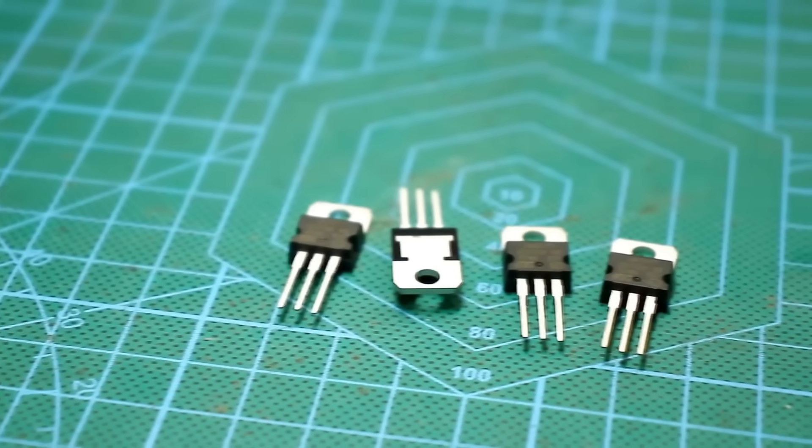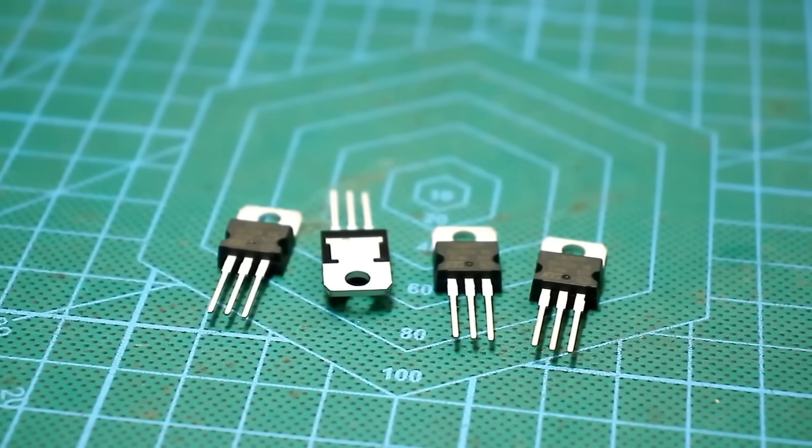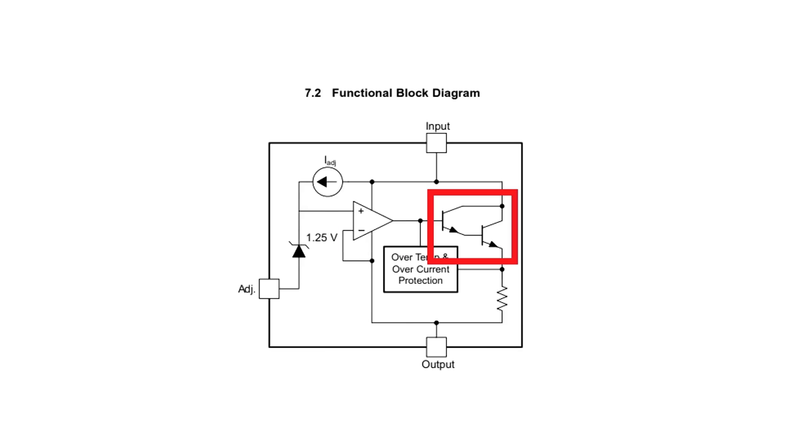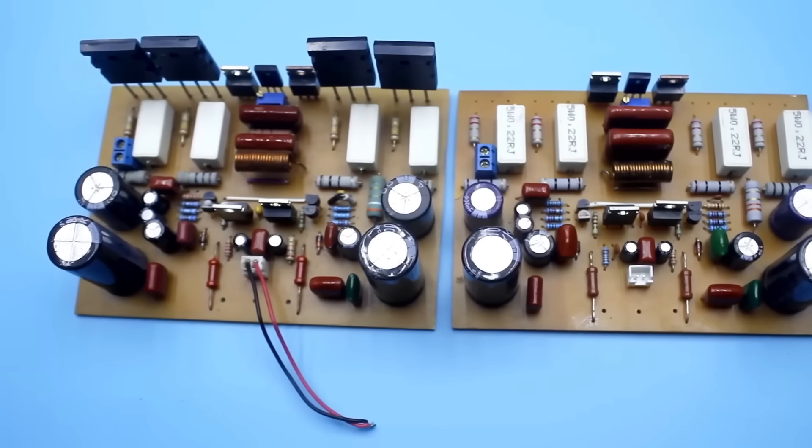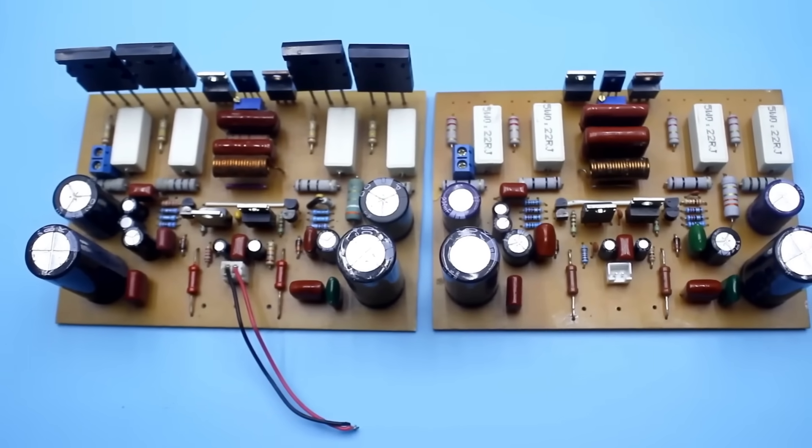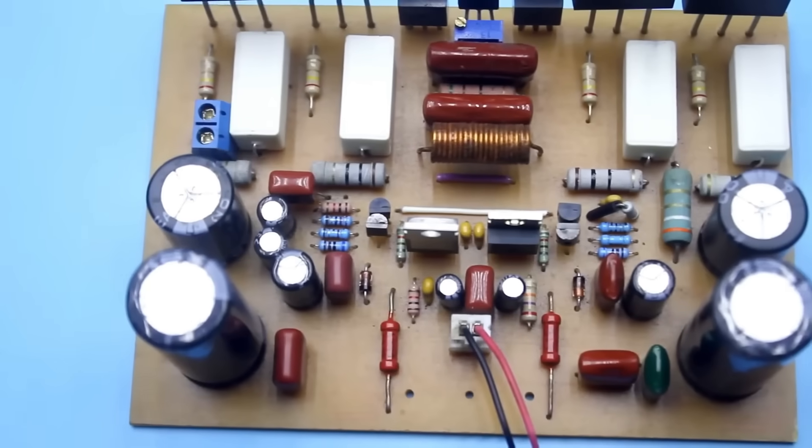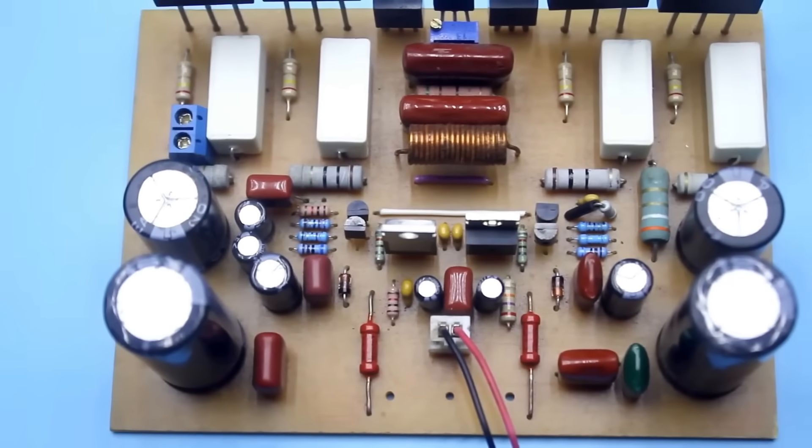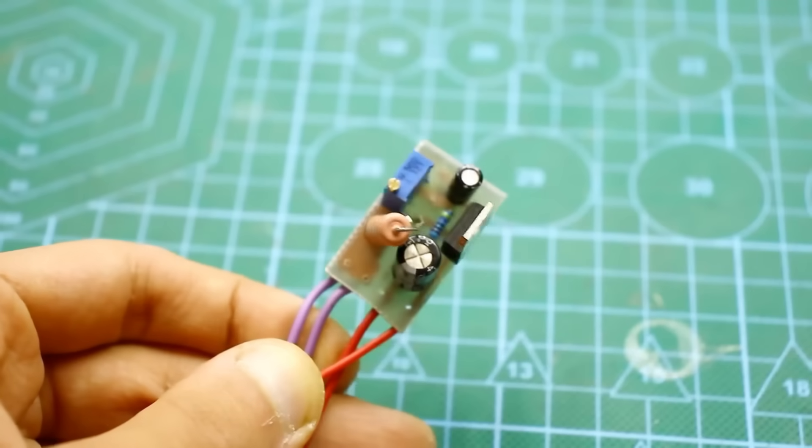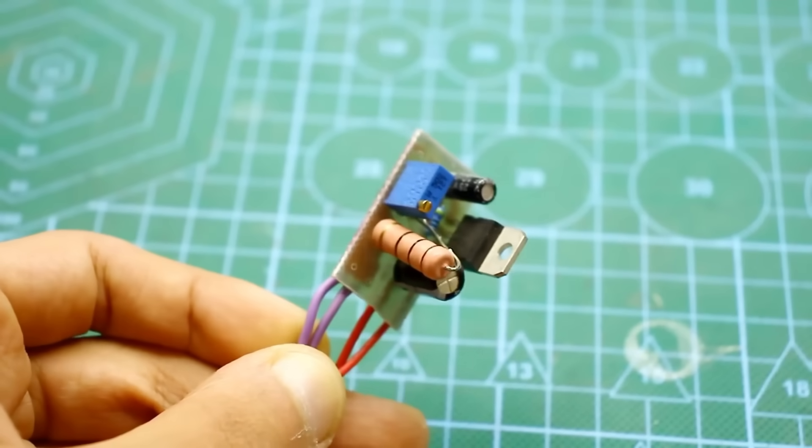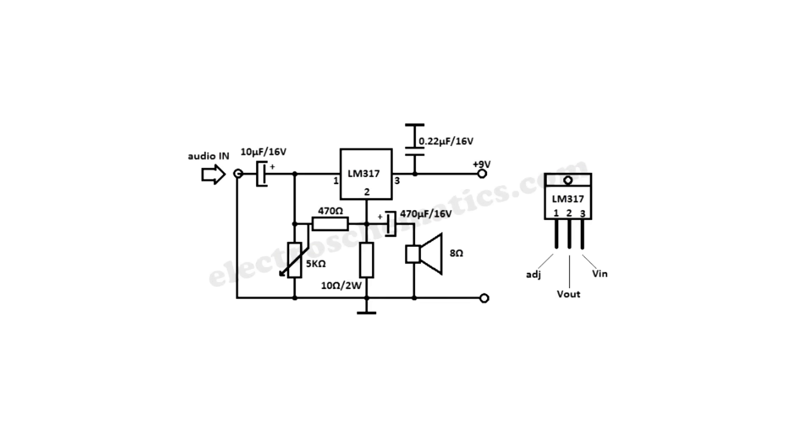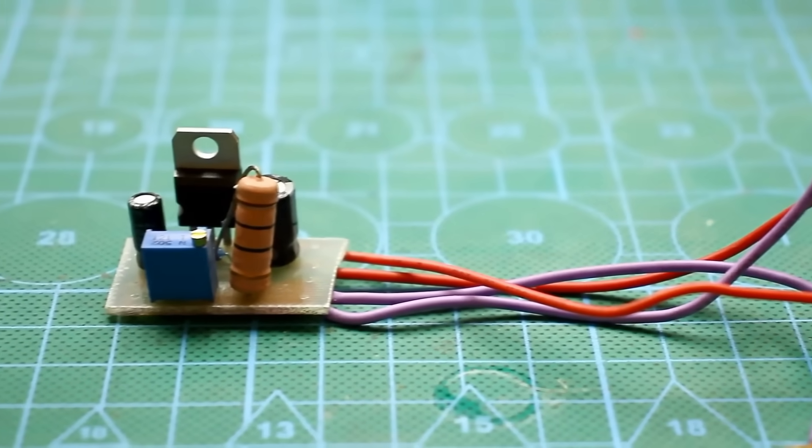The LM317, like any other stabilizer of a similar type, contains a comparator and an output stage inside, which represents nothing other than a current amplifier. If you look at the schematic of an audio frequency amplifier, you will find that the same principle is embedded in them. A stage for voltage amplification and an output stage for current amplification. Audio enthusiasts have not overlooked this, and you can find audio amplifier schematics based on the LM317 online.